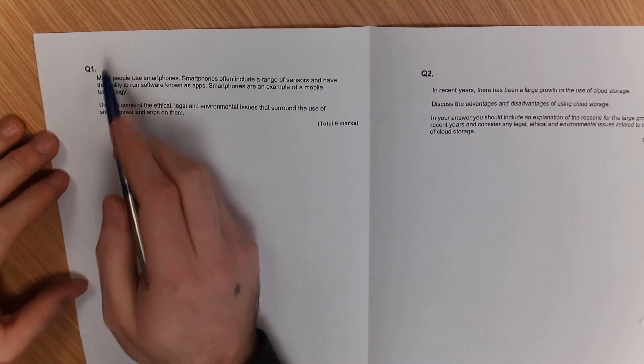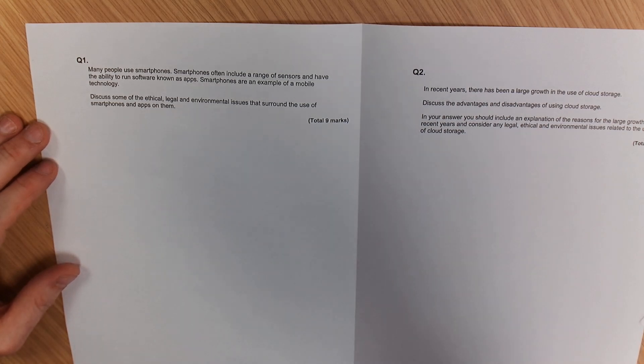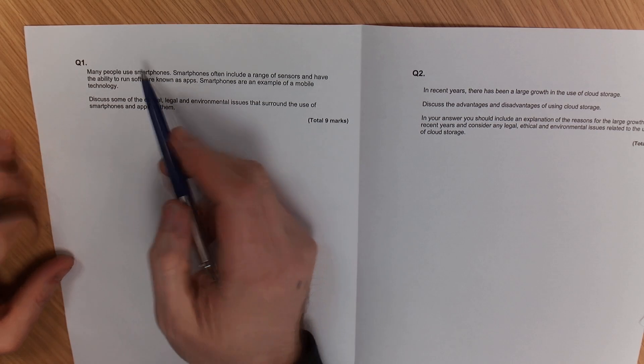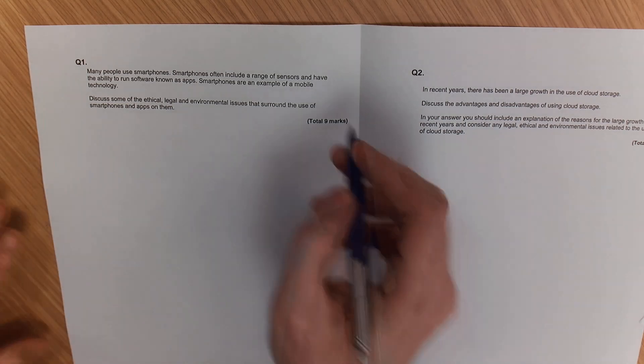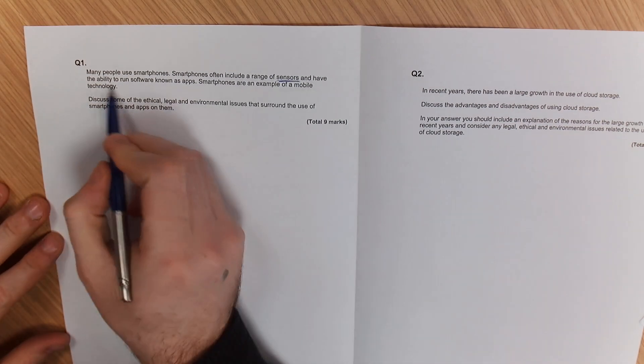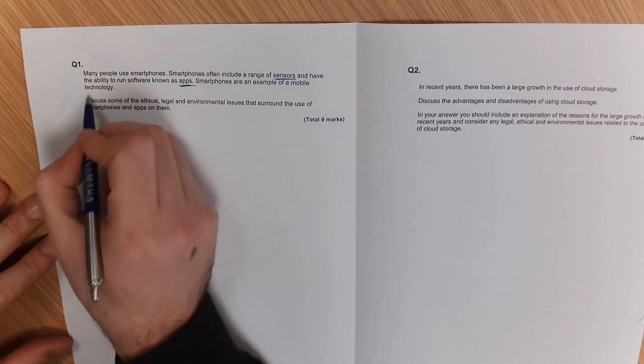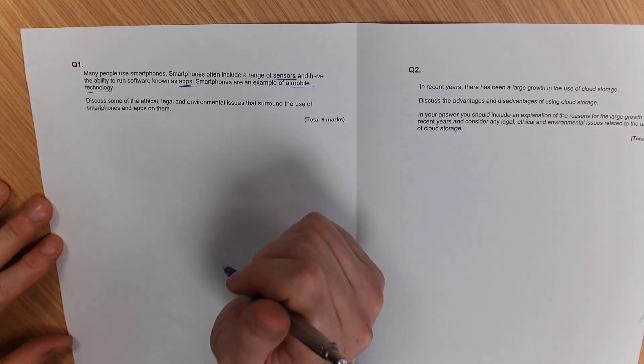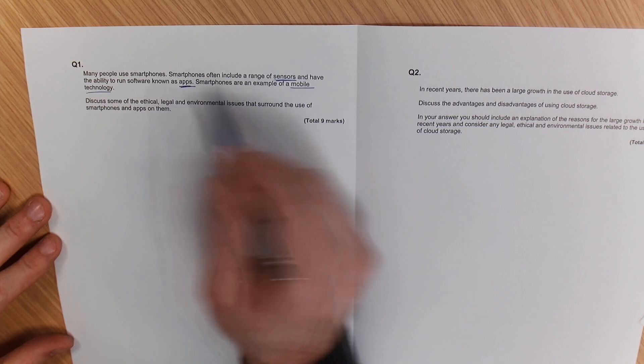Looking at the questions that we've got here, we're going to go through a couple of these but I'm going to help you break them down into where the marks come from. So have a quick look. We've got many people use smartphones. Smartphones are often used for a range of sensors and have the ability to run software known as apps. Smartphones are an example of mobile technology. I always go through and tend to highlight the key words that I think it's talking about. So in this case, technology.